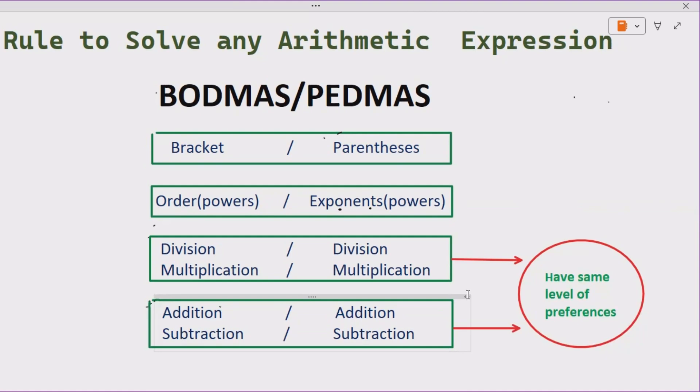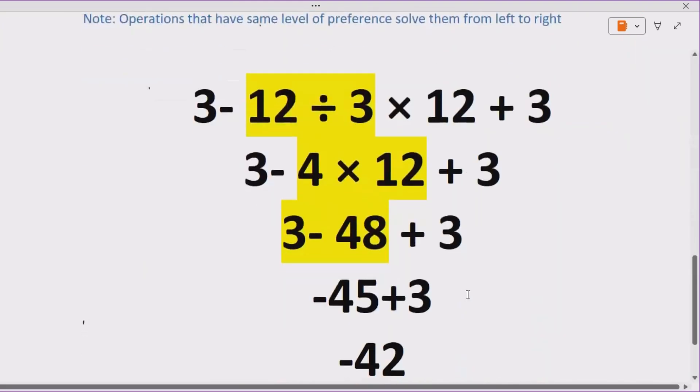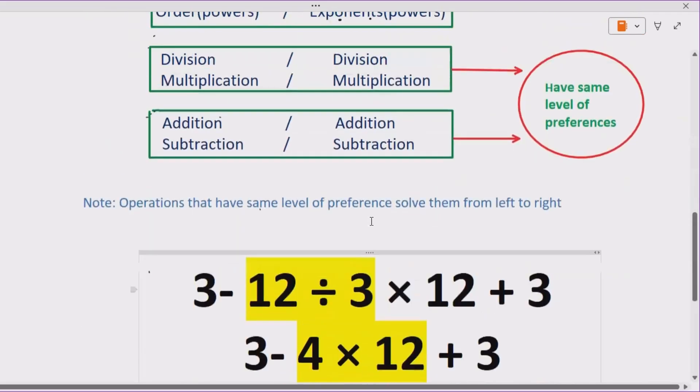Now let's see how we can solve our expression using this rule. So here you can see we have 3 minus 12 divided by 3 multiplied by 12 plus 3. So according to BODMAS